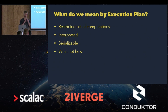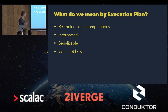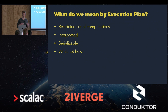I think there are four things that characterize what I'm talking about when I talk about execution plans. First, there should be a restricted set of computations. We're not trying to create a universal Turing machine. We want to define a basic set of primitives that we can use to create complex computations through composition, but still give us a reasonable basis for optimization.